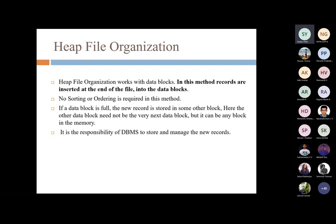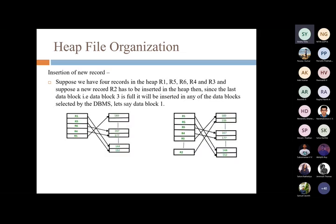The other data block need not be the very next data block — it can be any data block in the memory. It is the responsibility of the DBMS to store and manage the new records. For example, consider this heap file organization: you have five records in the heap — r1, r5, r6, r4, and r3. Suppose a new record r2 has to be inserted. Since the last data block, data block three, is full, it will be inserted in any of the data blocks selected by the DBMS.